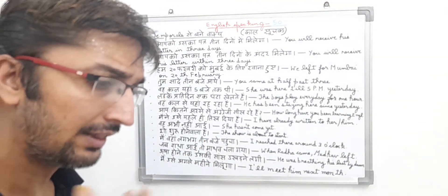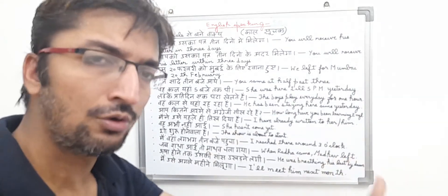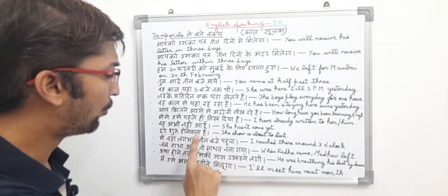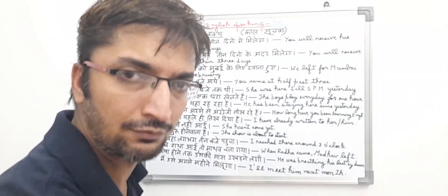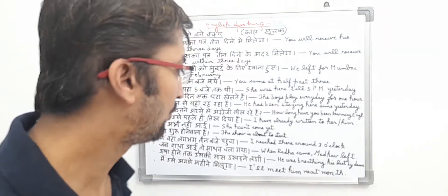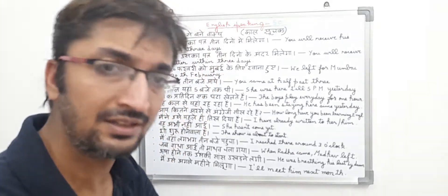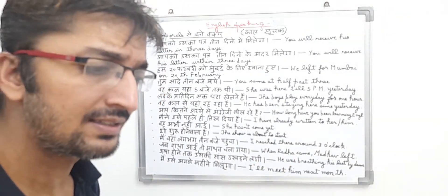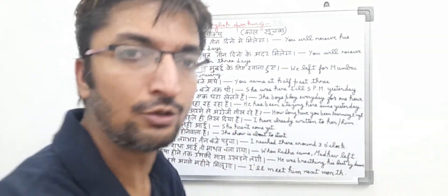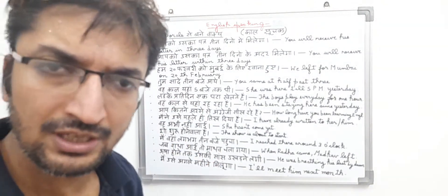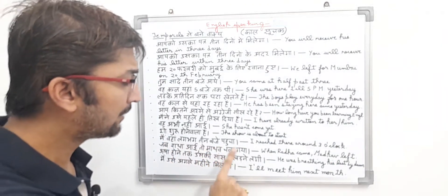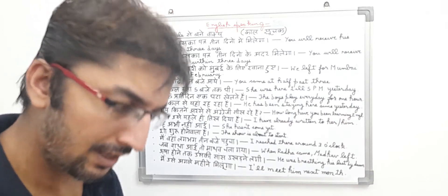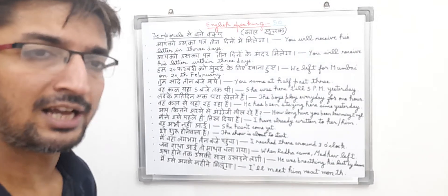The show is about to start. In this sentence it is a present tense. They are trying to say the show is going to start — it has not started yet. The show is about to start means it can start within five minutes, ten minutes, fifteen minutes, or half an hour. So it is a temporal type sentence. In English: I reached there around three o'clock. The person is telling the perfect time duration in which he reached a particular place. It is a past tense and a temporal type sentence.